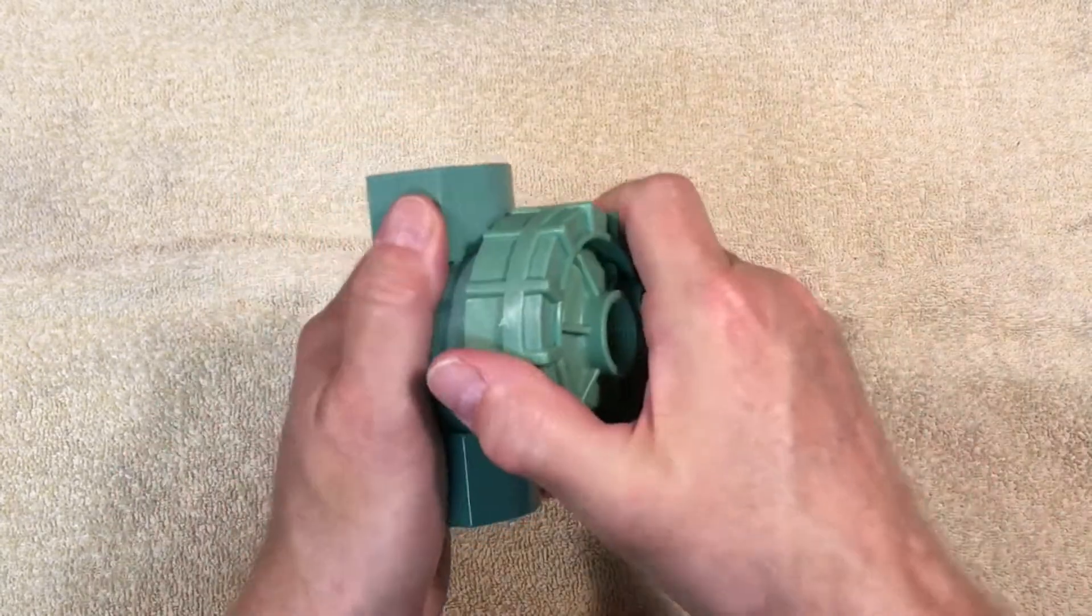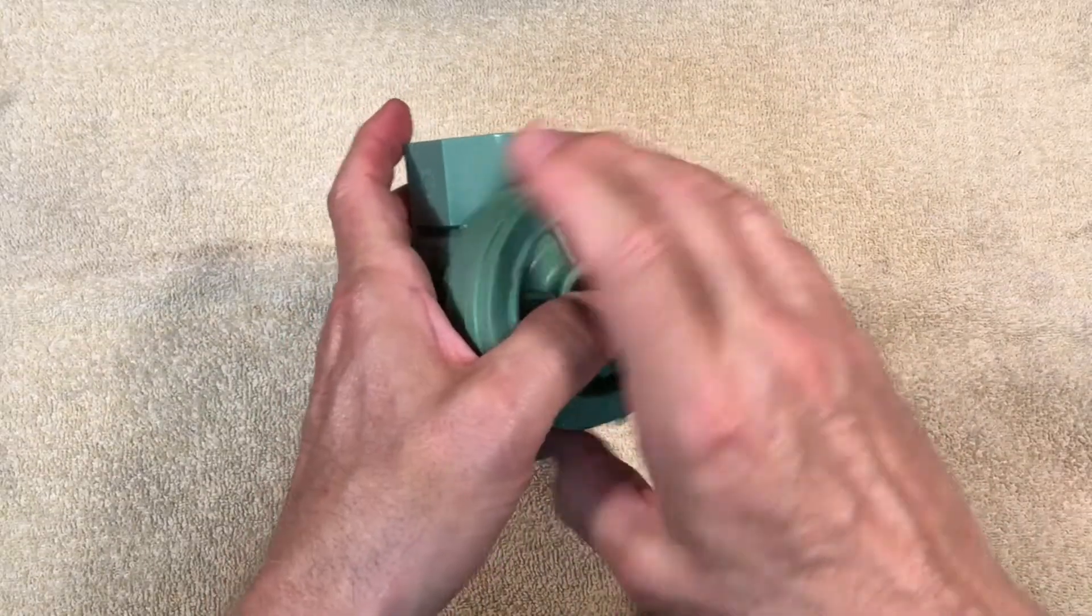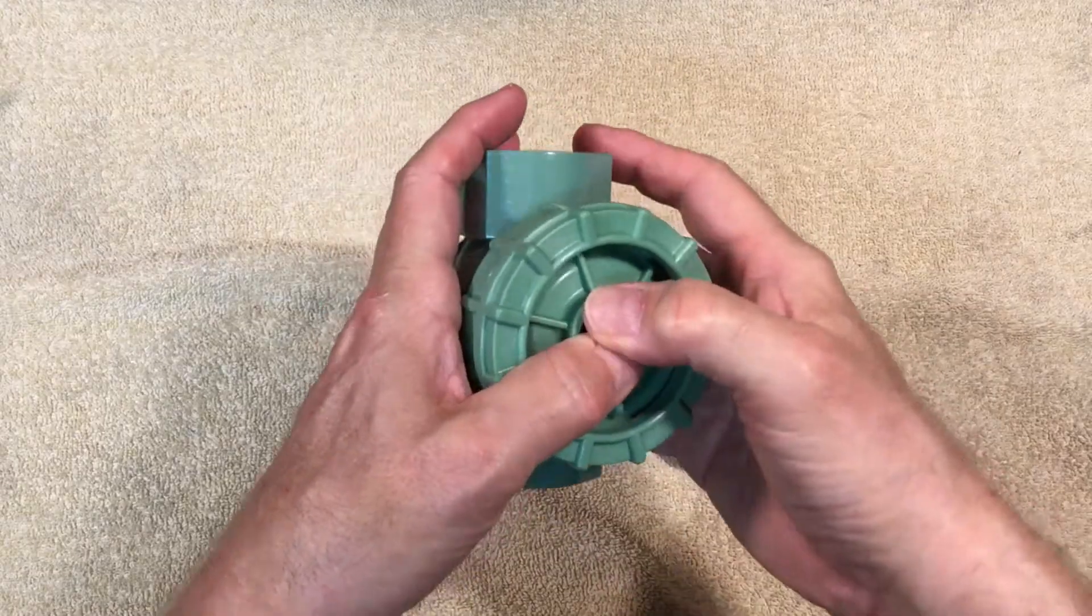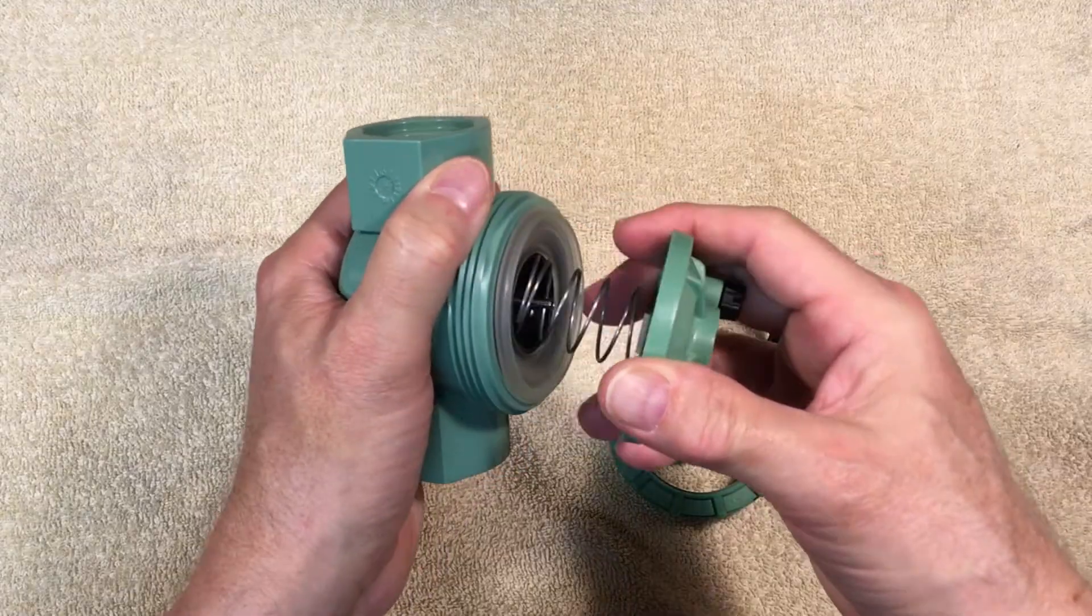There's an outer ring that screws off to release the cap, just like a mason jar. Unscrew the cap on one of these and check out what's inside. Be careful when removing the cap because there's a spring in there you don't want to lose.